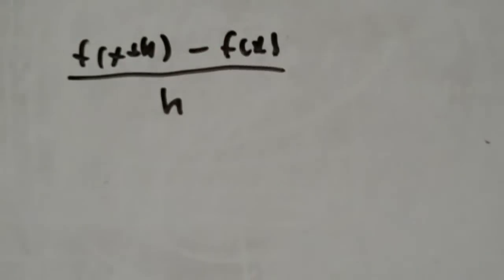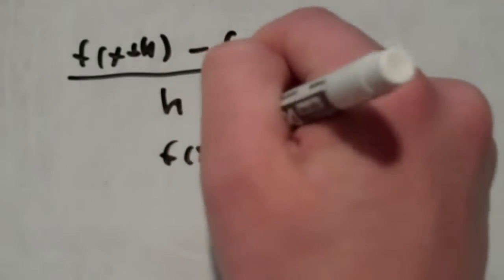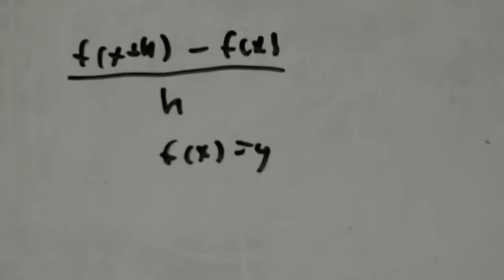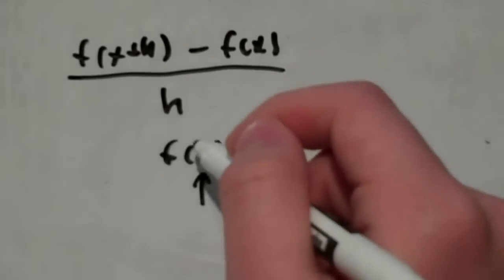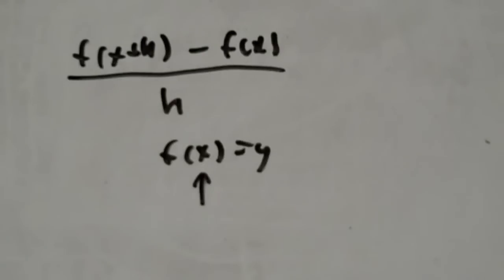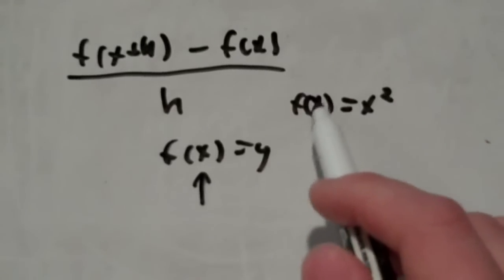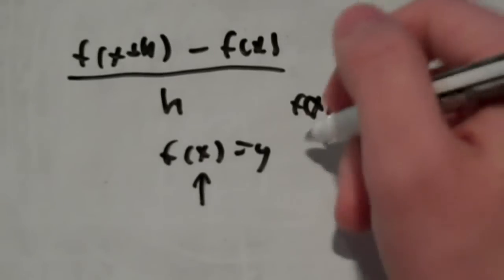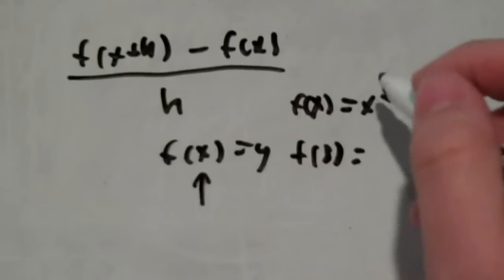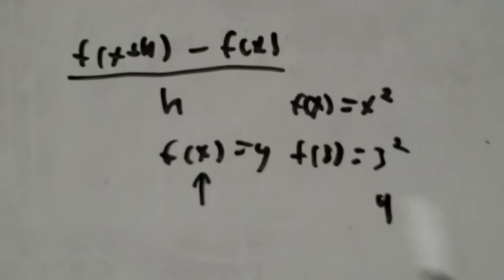Now, there is an equation to figure out what the derivative is so you can figure out tangent lines. What that equation is, is f(x+h) - f(x) all over h. Now, before I continue on, I should point out that f(x) is the same as y. They're interchangeable. The only difference being that the x here, whatever you have in the parentheses, is what you plug in for the x for the rest of the equation.